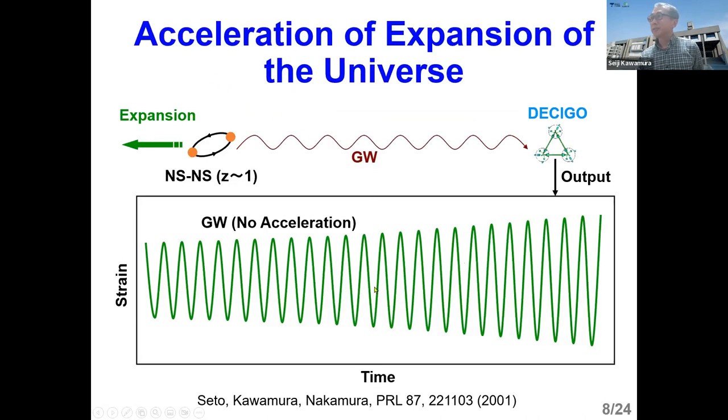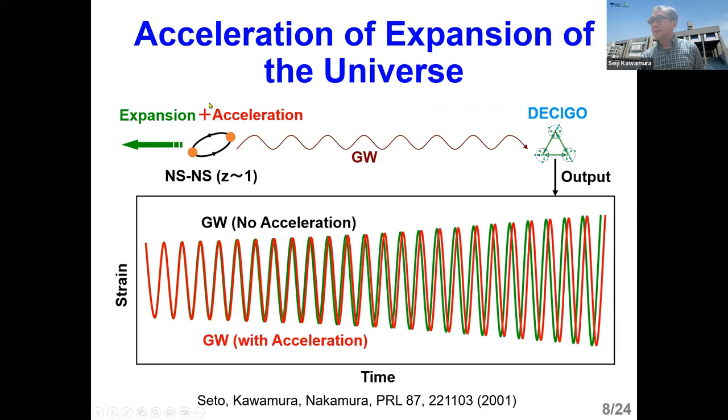And this shows the measurement of the acceleration of the expansion of the universe. So assume that we have neutron star, neutron star binary. And the gravitational waves are emitted from that. And we detect that with DECIGO. And this is a kind of waveform of gravitational waves. And, of course, assuming there's no acceleration. But if there's acceleration, we see some phase change, phase difference between those two waveforms. So we can directly measure this acceleration effect.